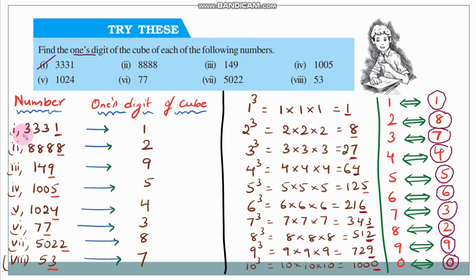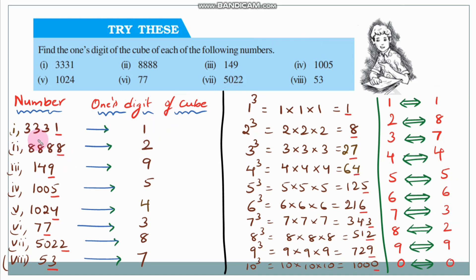Now let's find the answers. For 3331: the units place digit is 1. Since 1³ = 1, any number ending in 1 gives a cube ending in 1. So the answer is 1.